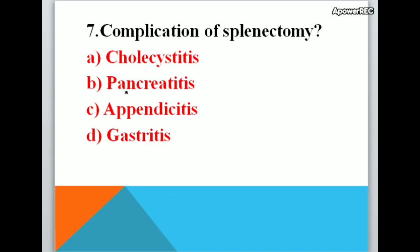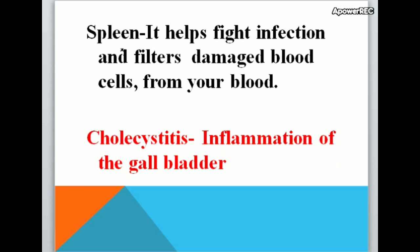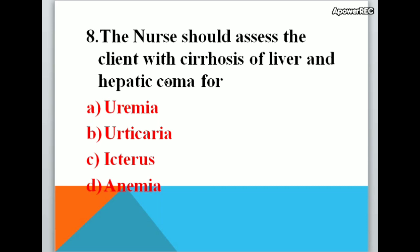Next question: Complication of splenectomy — A. cholecystitis, B. pancreatitis, C. appendicitis, D. gastritis. Correct answer is pancreatitis. The spleen helps fight infection and filters damaged blood cells from your blood. Cholecystitis is inflammation of the gallbladder.